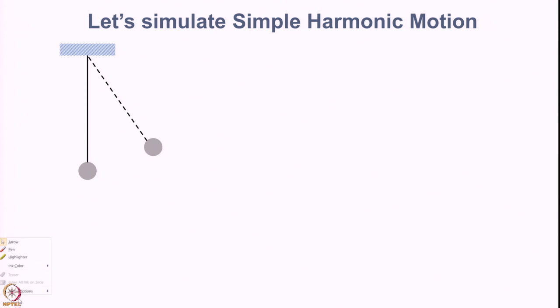To build a stock and flow model we need to define what the stocks and flows are. We can define the center as point 0, with plus 1, plus 2, plus 3 and so on to the right, and minus 1, minus 2, minus 3 and so on to the left.